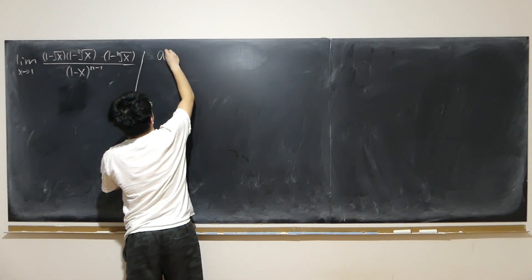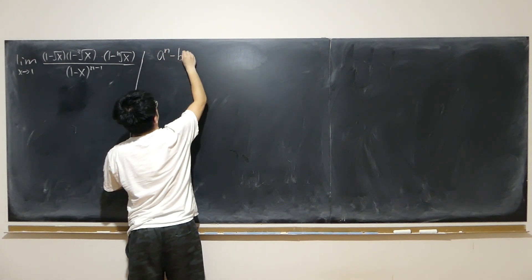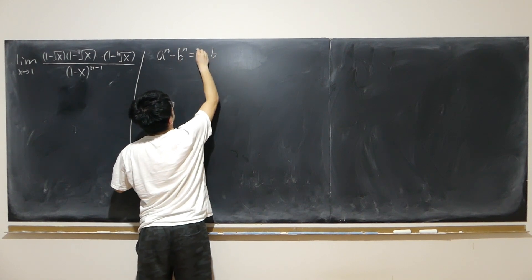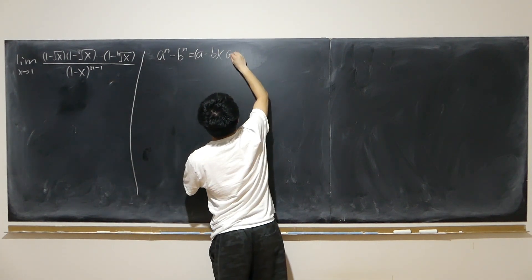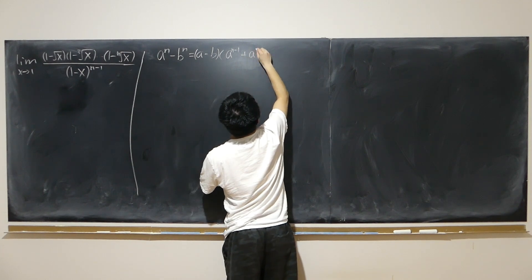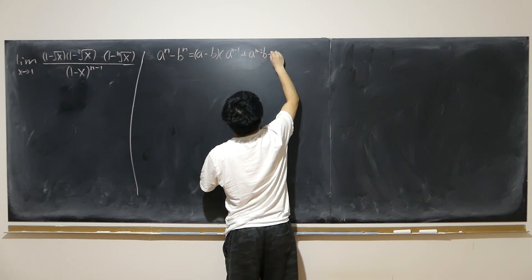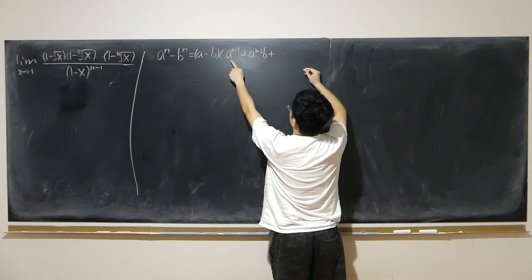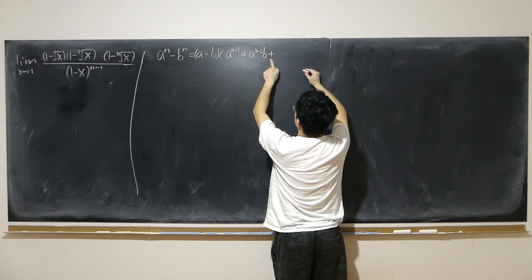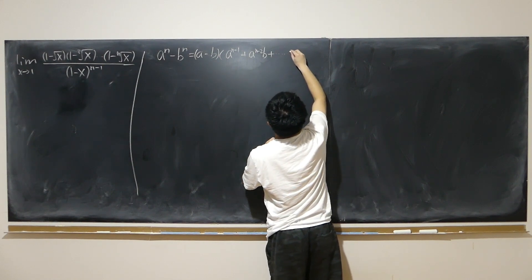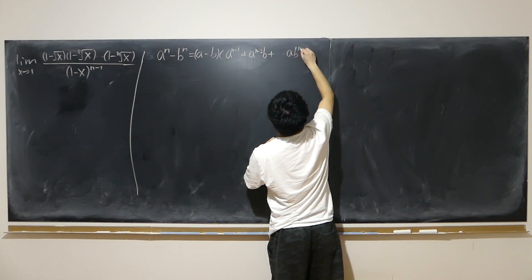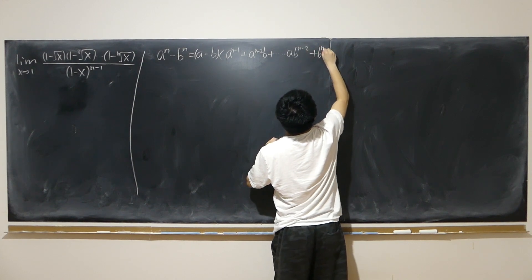I call it a to the power of n minus b to the power of n, where n is some natural number. That is equal to a minus b, times a to the power of n minus 1, plus a to the power of n minus 2 times b. Every time the power of a keeps decreasing and the power of b keeps increasing, until we reach b to the power of n minus 1.